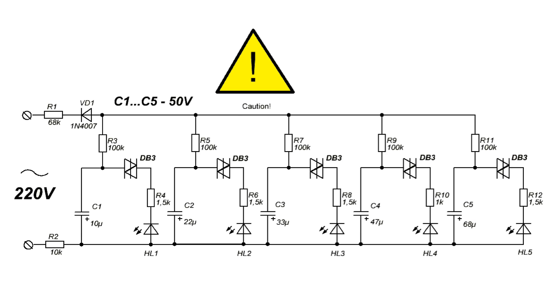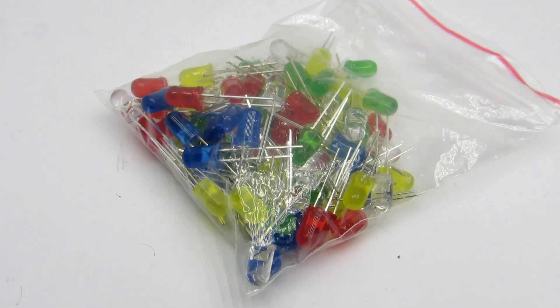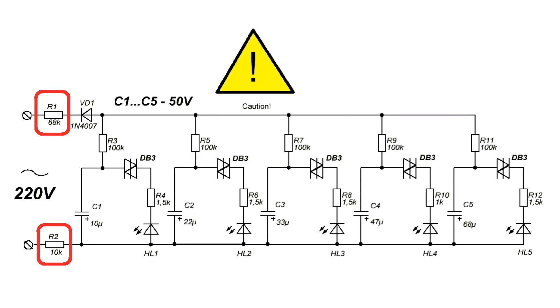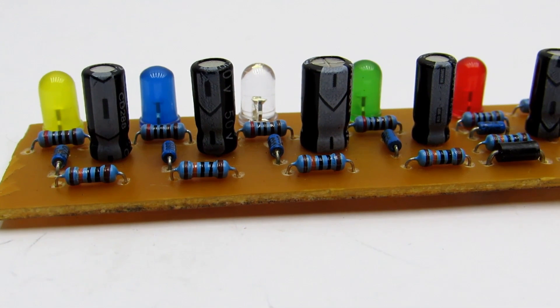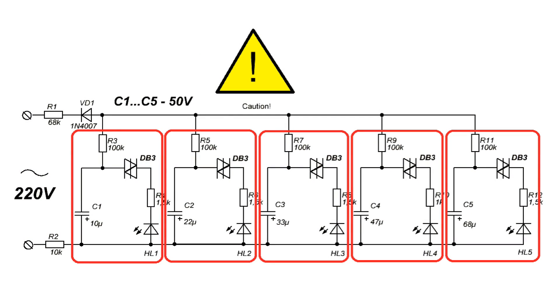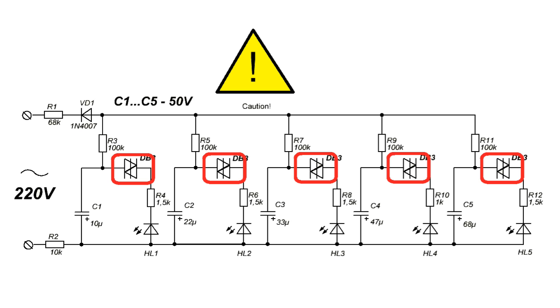The scheme is universal. In my case only five LEDs but their number can be anything. Powered directly from 220 volts, current limited by resistors R1 and R2, then rectified by diode VD1 - it just cuts the top half-wave of the network sinusoid. The scheme consists of identical separate generators for each LED. They are based on a symmetric denister.